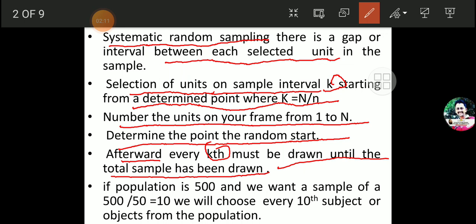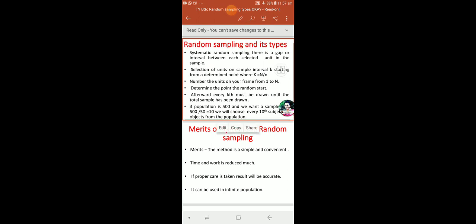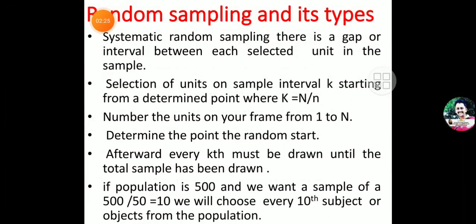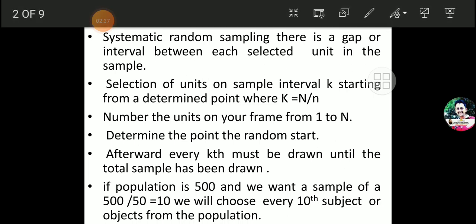Now, what is this systematic random sampling? We will see it with an example. Suppose we have a population of 500 individuals. The total population is 500, and we want to sample out 50 — that is, 500 divided by 50. So every tenth sample we will choose, every tenth subject or object from the population.